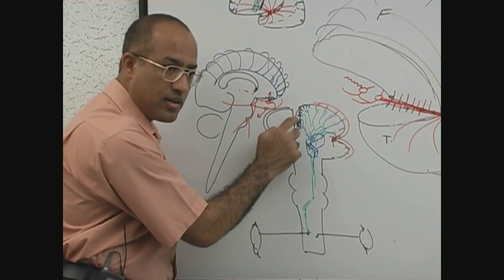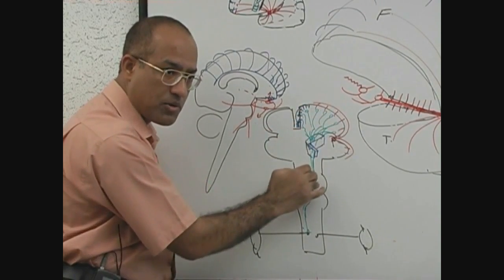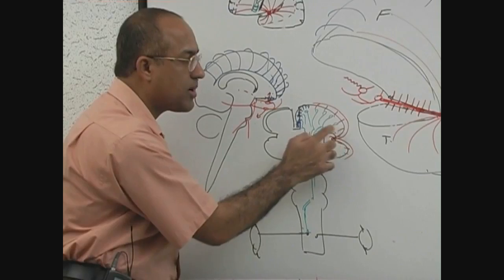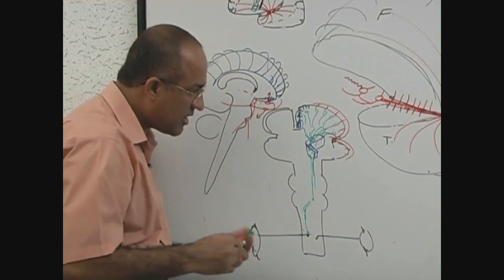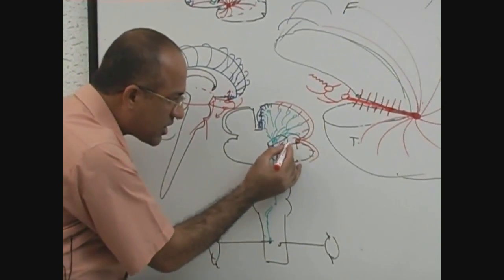The foot will be paralyzed, rest of the body will be okay. So this is about the middle cerebral and anterior cerebral cortical branches. But if the deep branches, penetrating branches which are coming to...